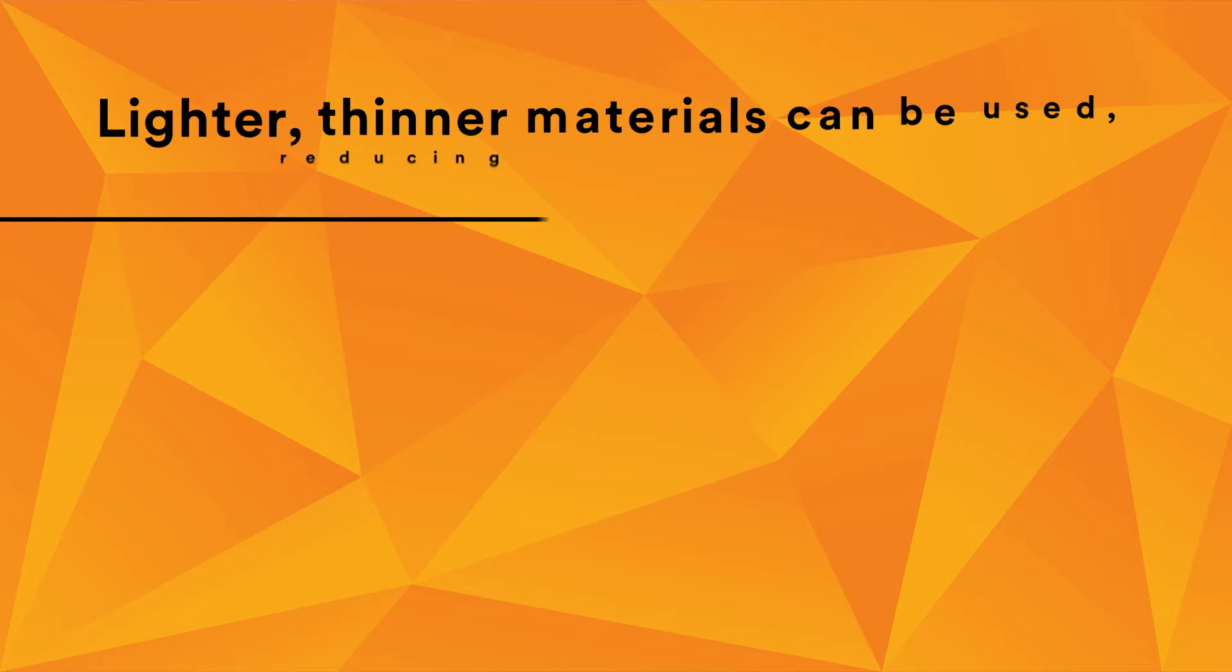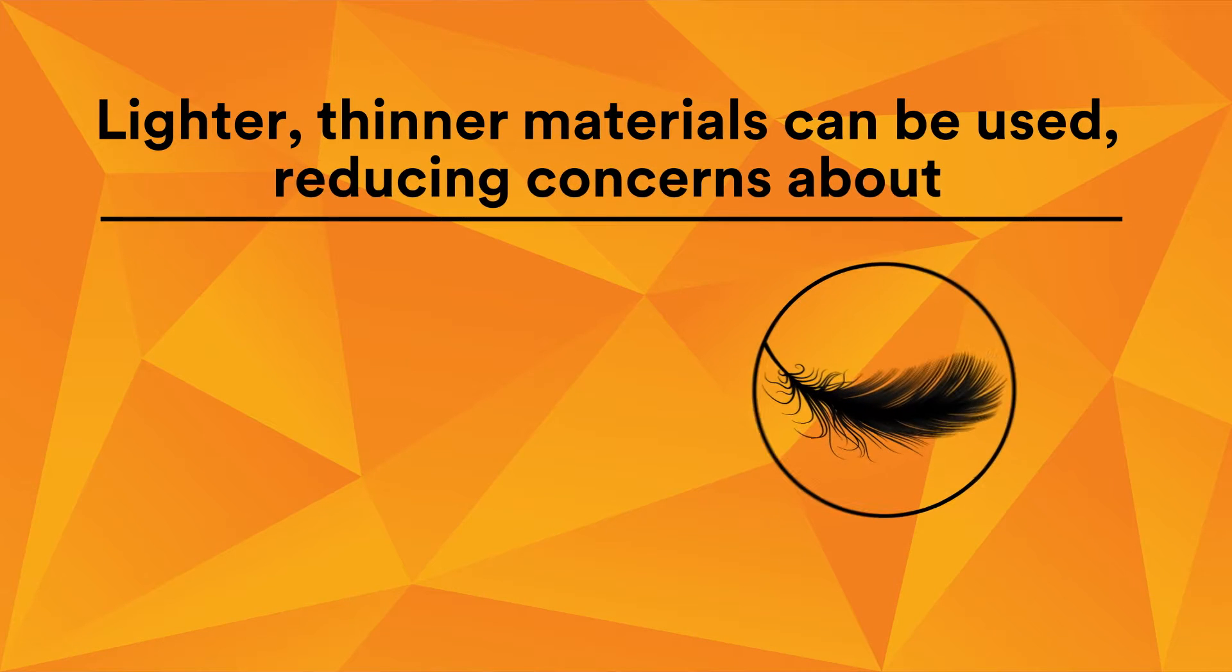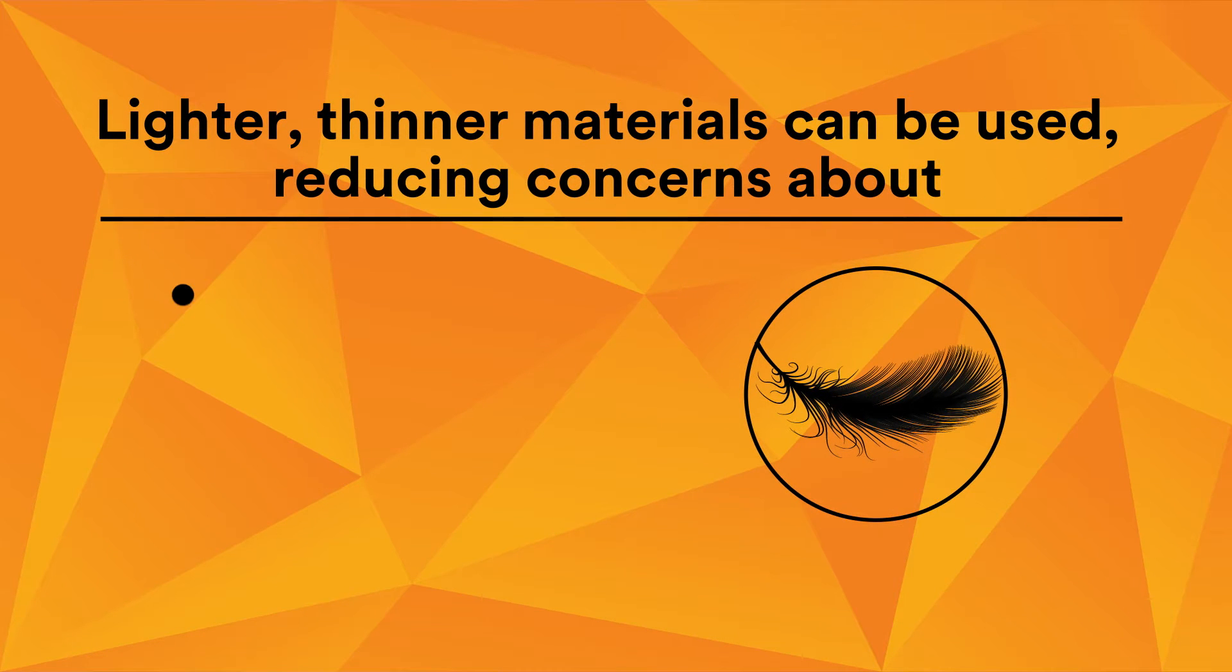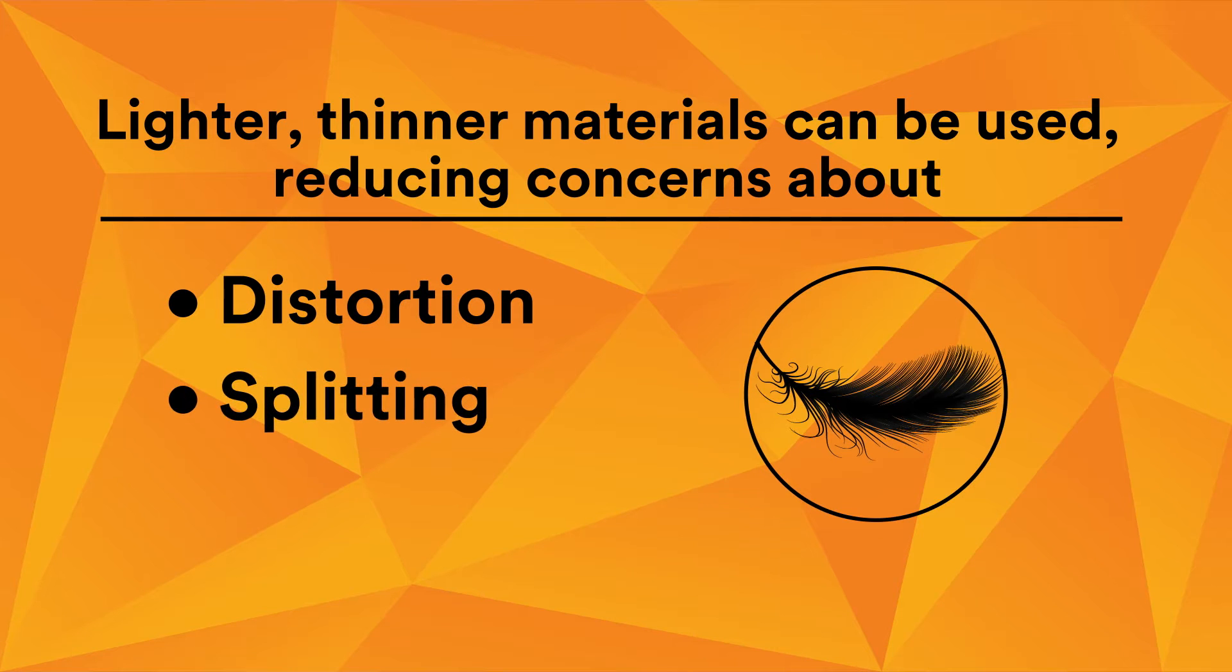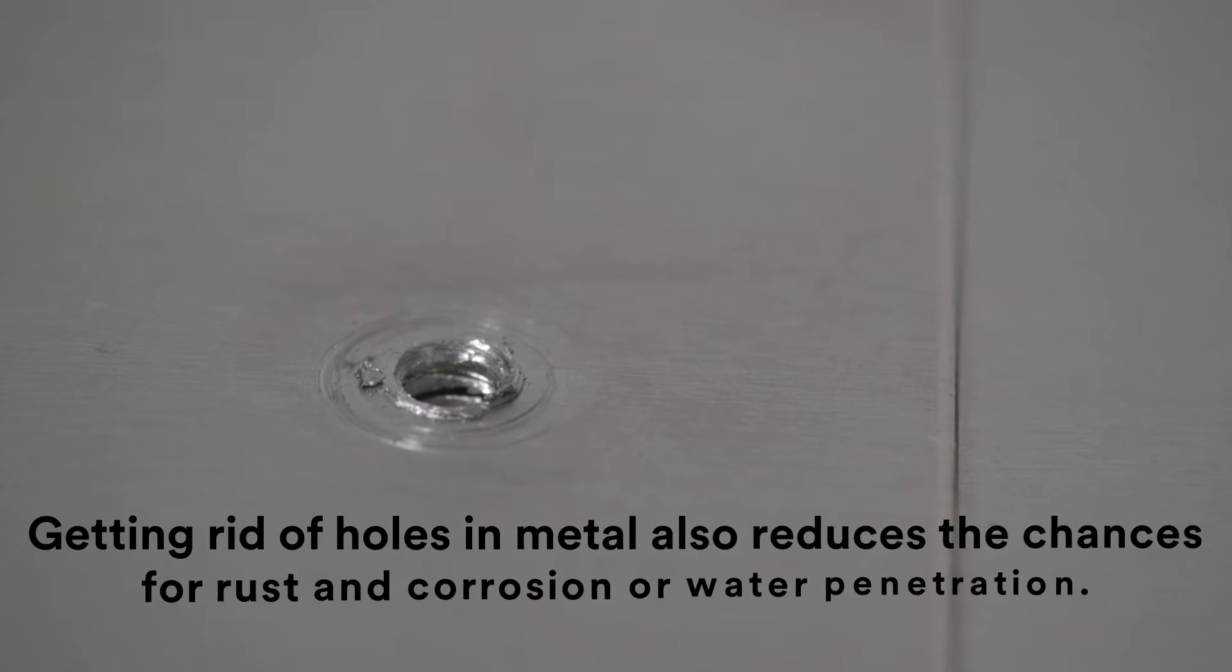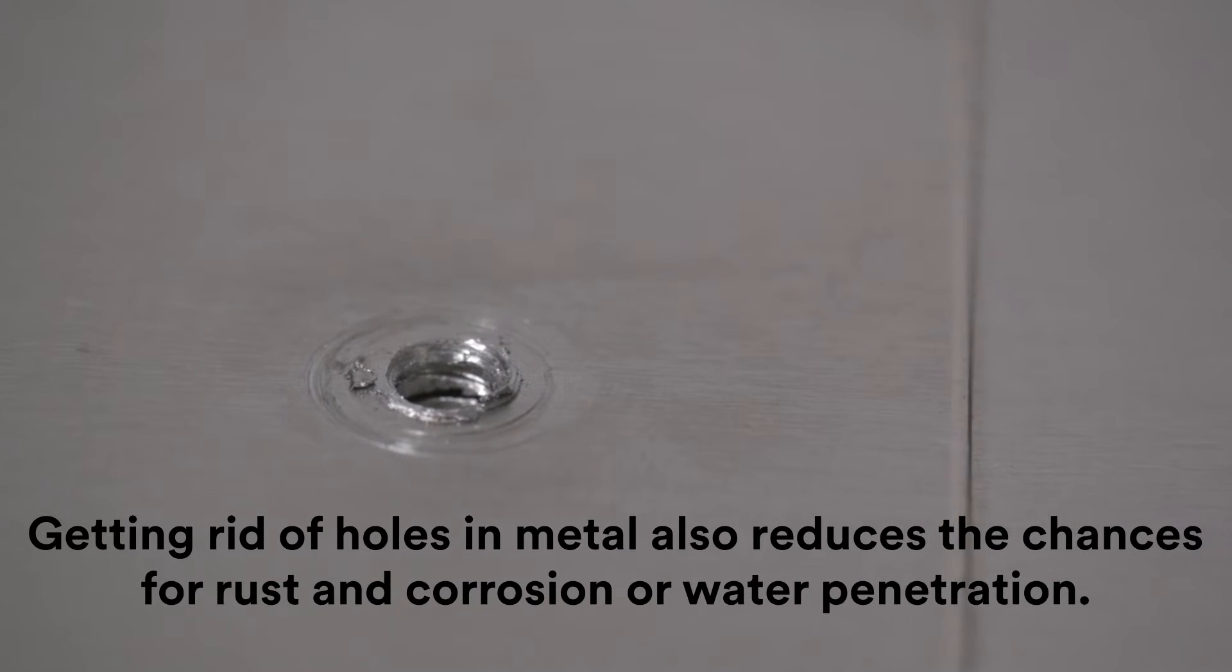With uniform stress distribution of adhesives and tapes, lighter, thinner materials can be used without concerns about distortion, splitting, or crazing at the mechanically fastened site. Getting rid of holes in metal also reduces the chances for rust and corrosion or water penetration.